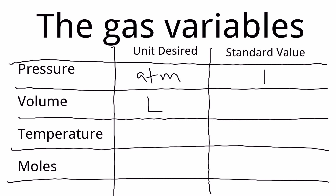Avogadro — the same Avogadro as Avogadro's number — also worked with gas laws and has his own gas law we'll discuss in a future unit. He found that one mole of any type of gas — helium, nitrogen, oxygen, any gas — provided it's at standard temperature and pressure, has a volume of 22.4 liters. This will come back into play when we calculate constants in the ideal gas law.